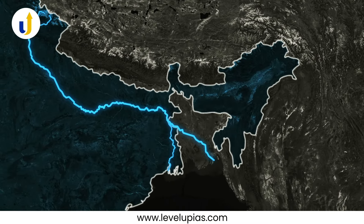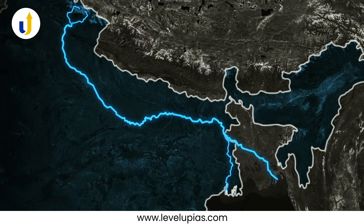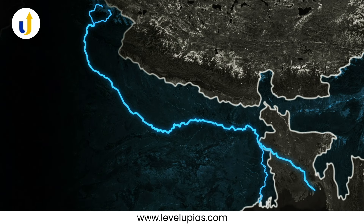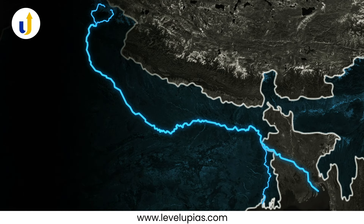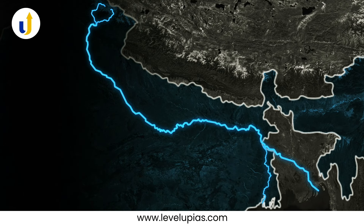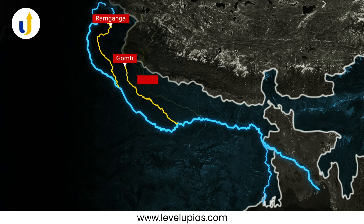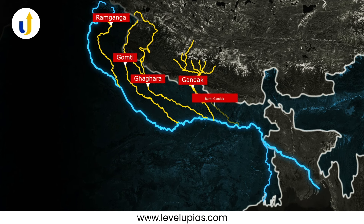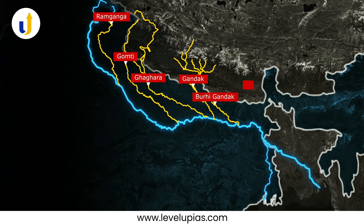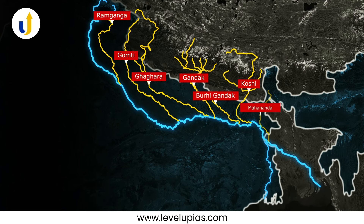The important tributaries of the Ganga river — its left bank tributaries are Ram Ganga, Gomti, Ghaghra, Gandak, Burhi Gandak, Kosi and Mahananda.